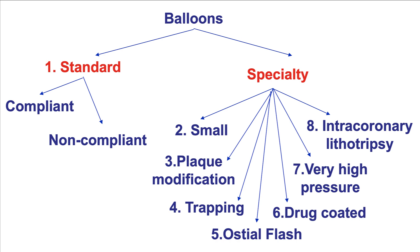In summary, there are several classes of balloons. Standard balloons — compliant and non-compliant — are used in the majority of cases. But awareness and availability of the other types of balloons, such as the small balloons, the plaque modification balloons, the trapping balloons, the osteo-fluss, and in the future drug-coated, very high-pressure, and intracoronary lithotripsy balloons, can provide a wide armamentarium to facilitate PCI of complex lesions with safety and efficacy. Thank you.